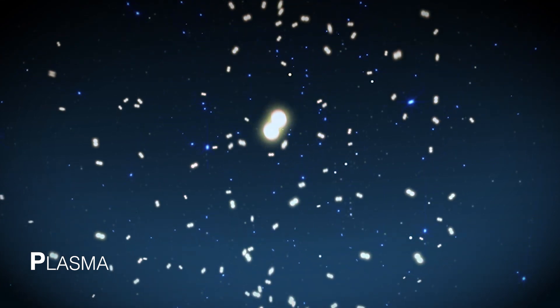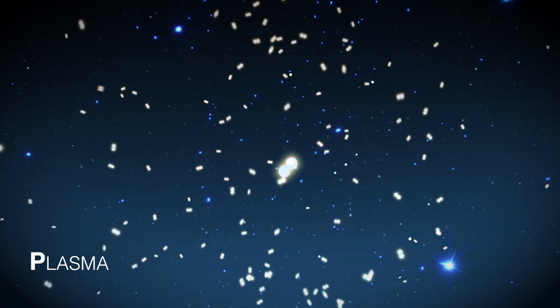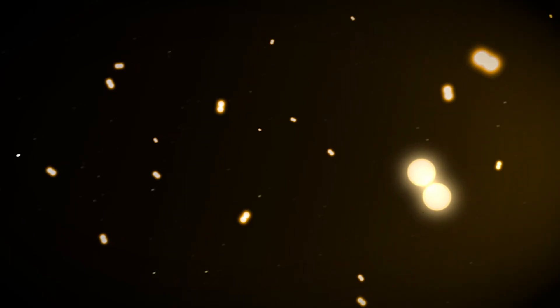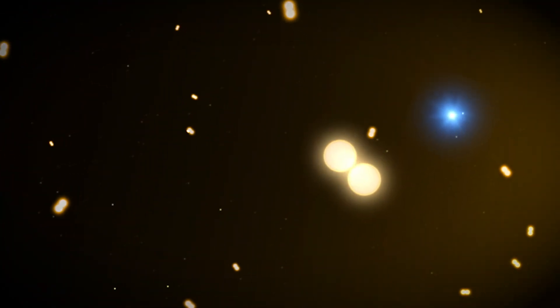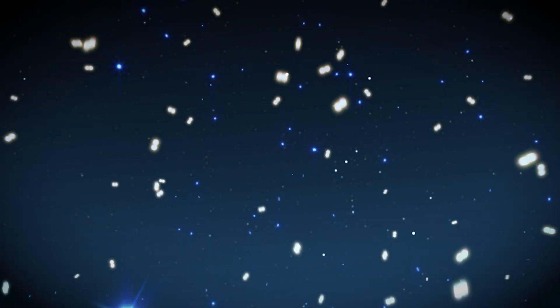After solid, liquid, and gas, plasma is the fourth state of matter. It is made of particles that have been ionized. This means the particles have been given so much energy that electrons separate from their atoms, making a subatomic soup.